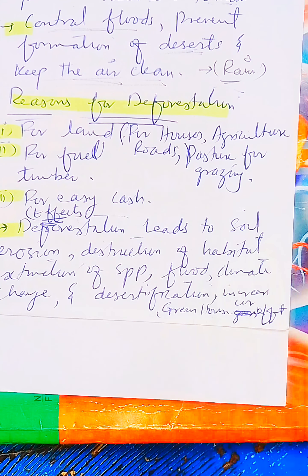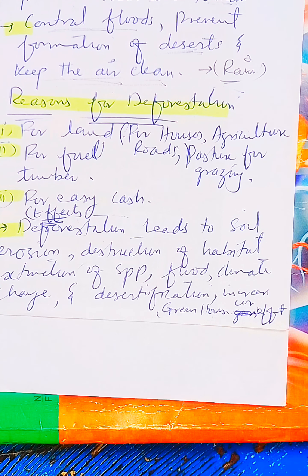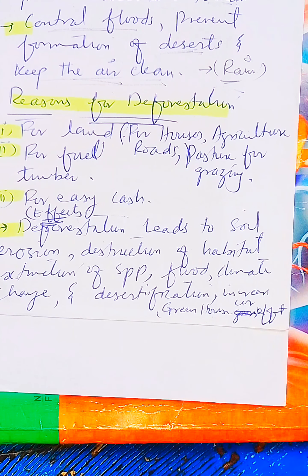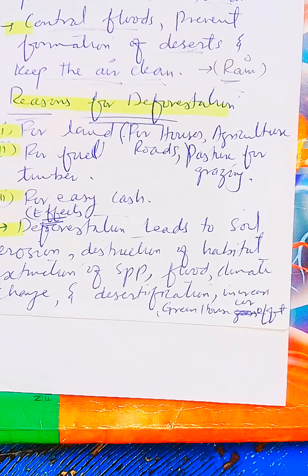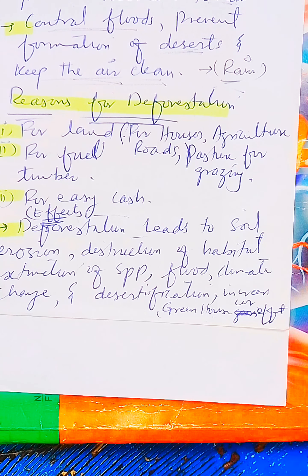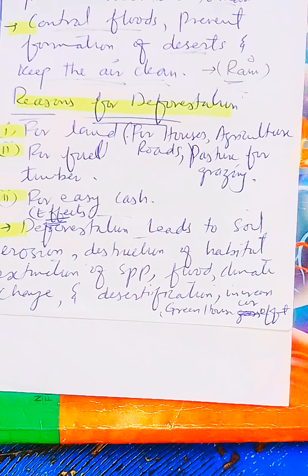Deforestation leads to an increase in greenhouse gases such as carbon dioxide, carbon monoxide, and nitrogen dioxide. These gases accumulate and contribute to the greenhouse effect and climate change.